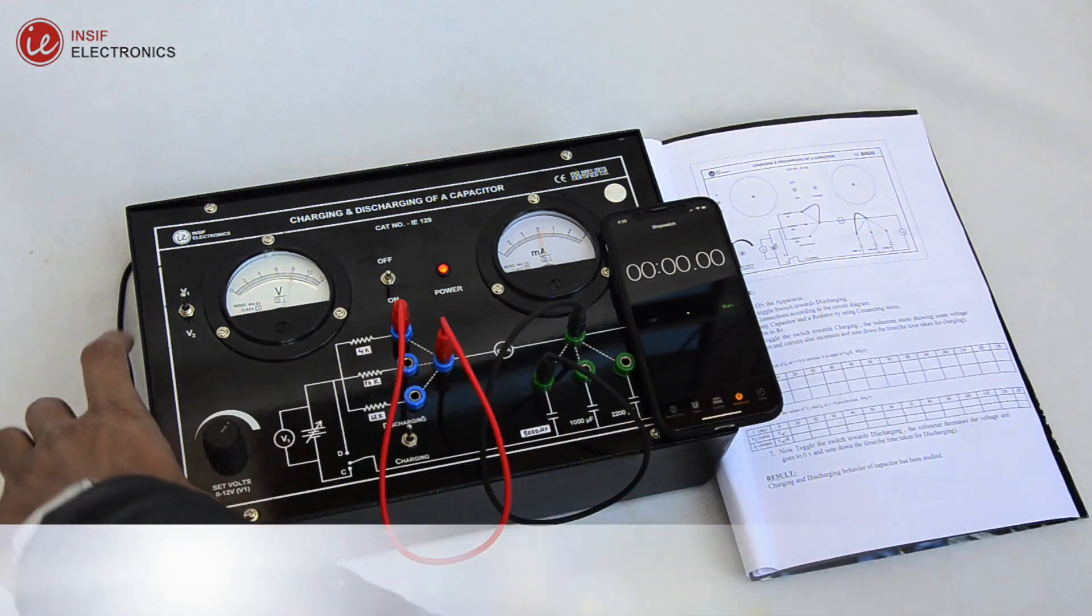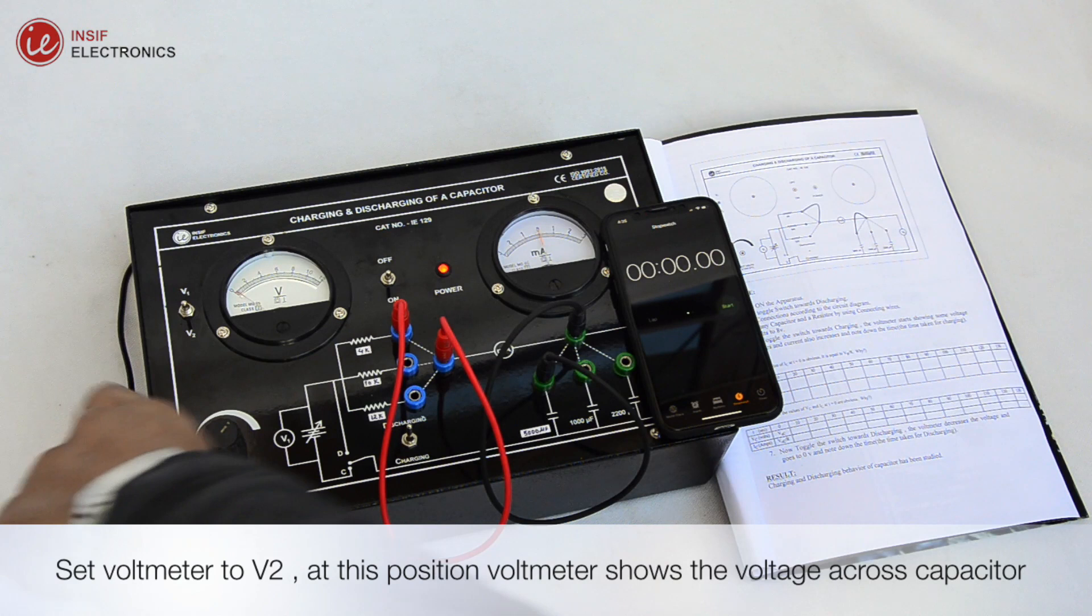Set voltmeter to V2. At this position, the voltmeter shows the voltage across the capacitor.